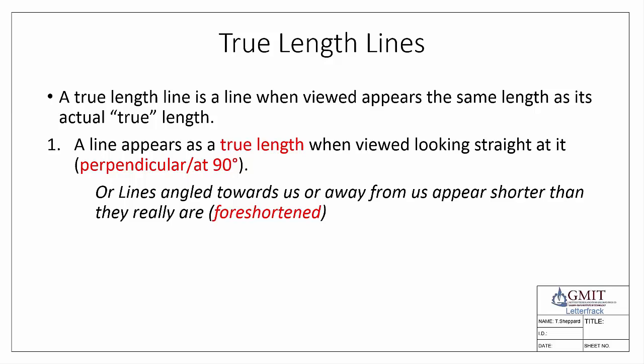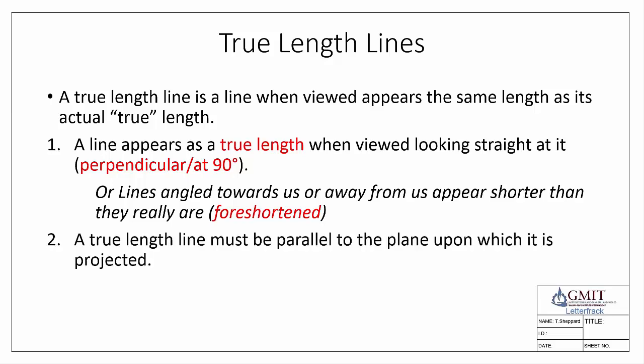If the line isn't perpendicular — if it's angled towards us or away from us — we won't see it as a true length; it will appear foreshortened. Our second condition is that the line must be parallel to the plane upon which it is projected. Anytime we take a view in orthographic projection we're projecting onto a plane, such as the vertical plane, an auxiliary plane, or the horizontal plane. The plane must be parallel with the line we're trying to find the true length of.